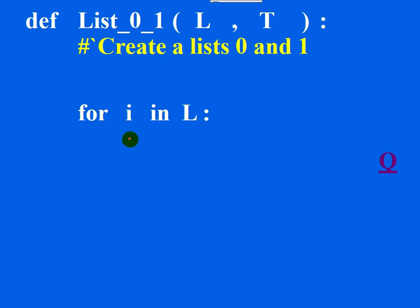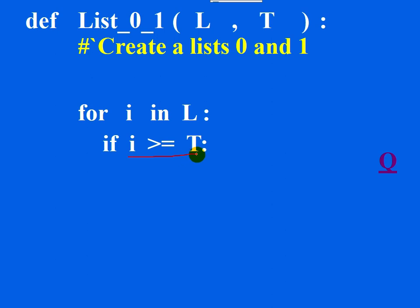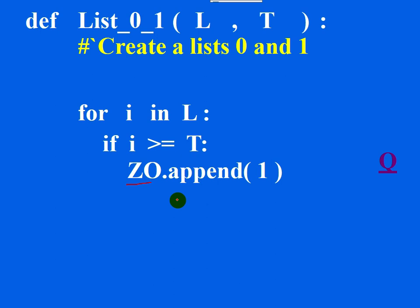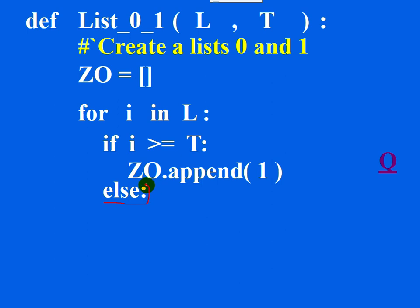To get each element of the list, use: for i in l. Here i contains each element. Check whether i is greater than or equal to the threshold number. If so, one should be appended to the new list. Create the new list, say zero_one, and use dot append to add one. It's very important that this list is given an initial value of empty list before the loop.